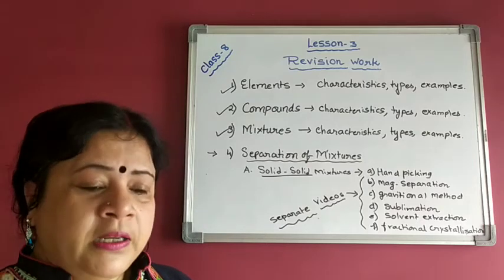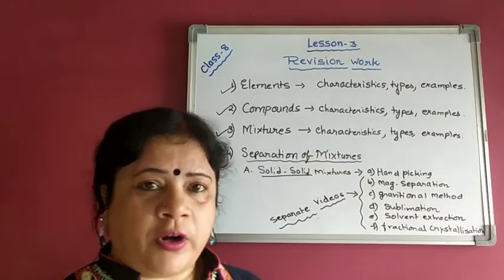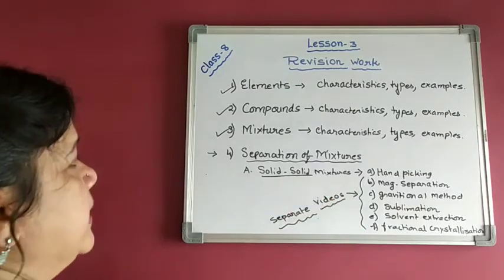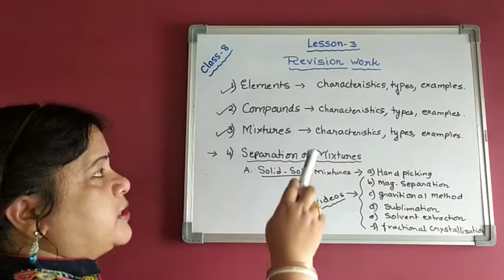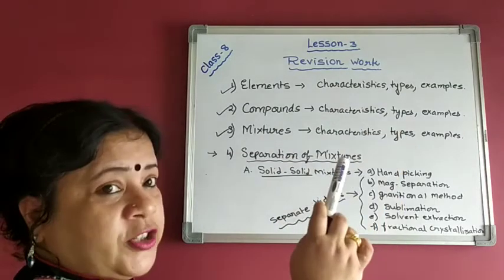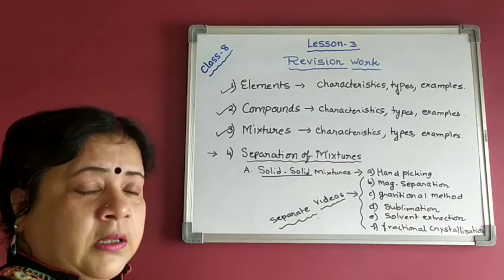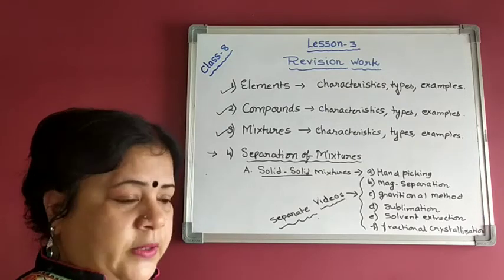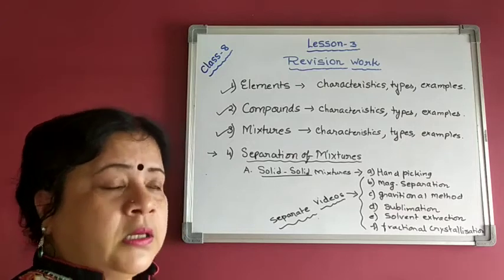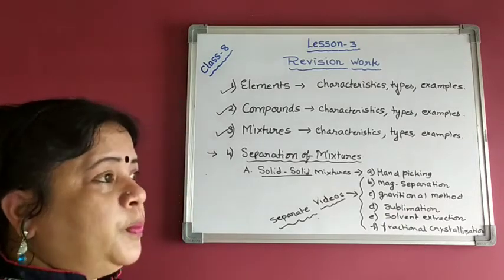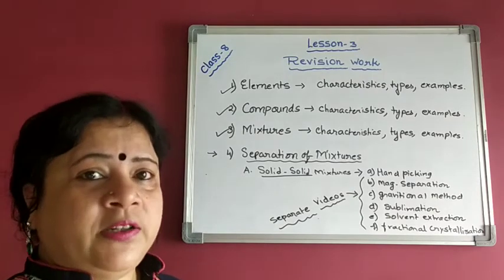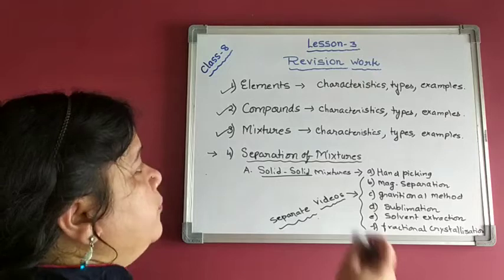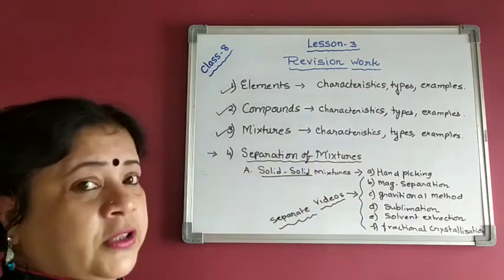Let me do some recollection of the work we have already finished. In elements, we have already covered all the characteristics of elements and the different types. There are four types of elements: metals, non-metals, metalloids, and those that don't behave properly as metals or non-metals, which are taken into separate cases. Many examples have been discussed in the video sessions.